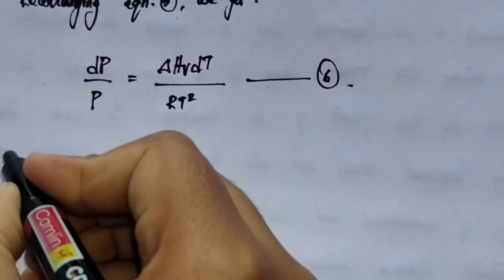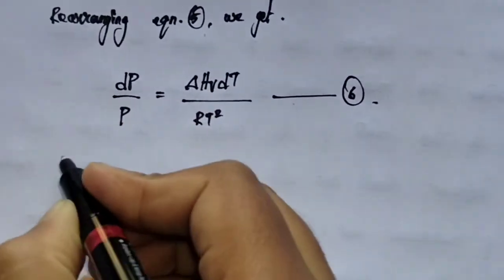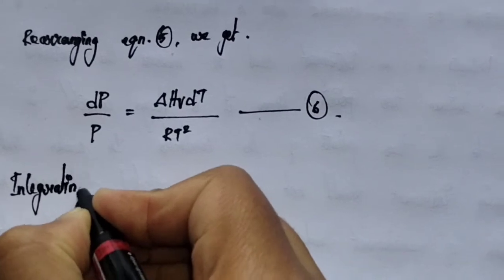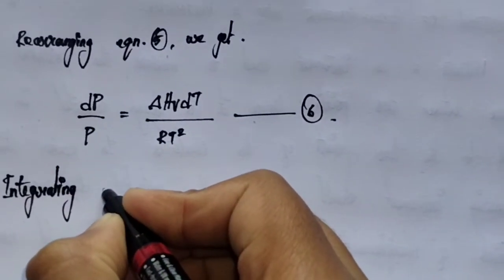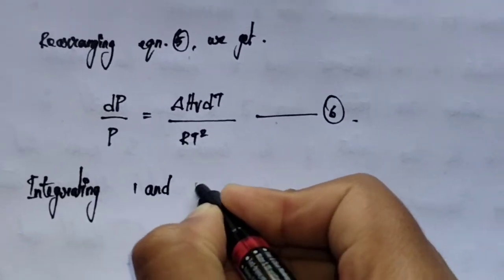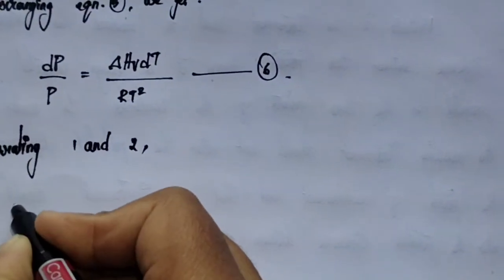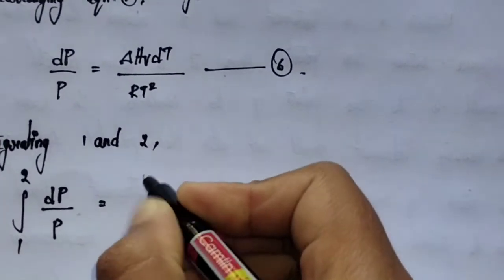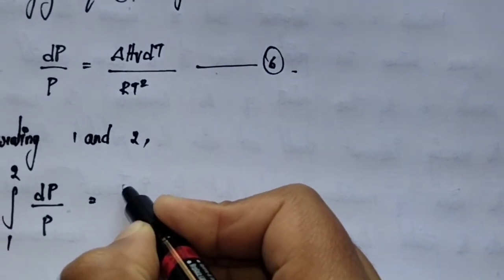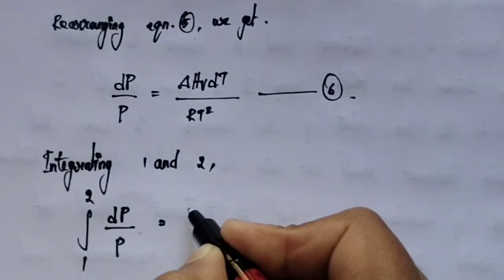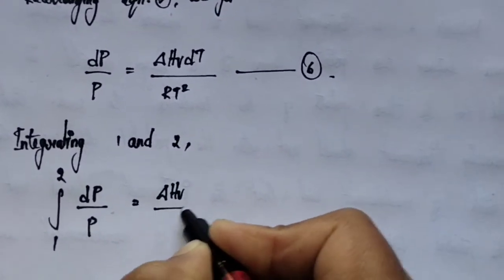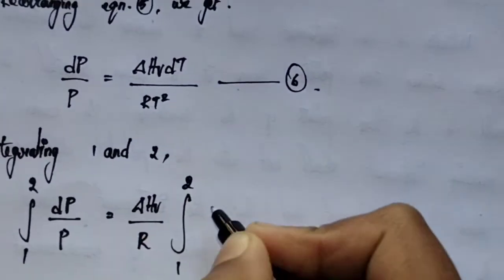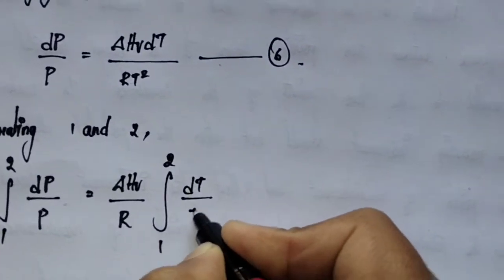Now taking integration of equation number 6 with limits 1 and 2, we get the integration from 1 to 2 of dP/P is equal to ΔHv/R, which is constant and taken out, multiplied by the integration from 1 to 2 of dT upon T².